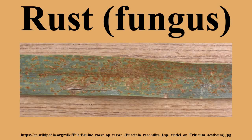Rust fungi genera include: Aecidium, Ceratelium, Chaconia, Coleosporium, Crossopsora, Didymopsaurella, Hamspora, Hapalophragmidium, Hemileia, Kernkampella, Kuneola, Qualinia, Macabuna, Maravalia, Melampsora, Olivea, Phakopsora, Puccinia, Ravenelia, Urasium, Uredo, Uredopeltes, Uromyces, Xenostella, and Zaghouania.